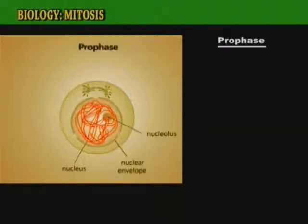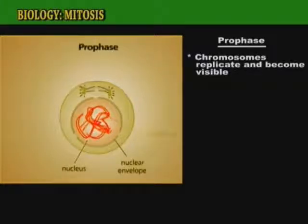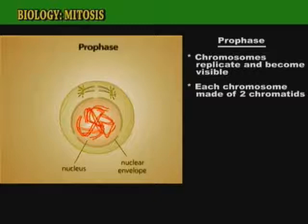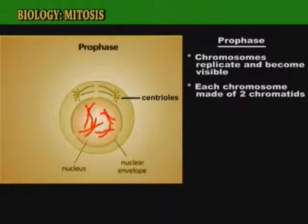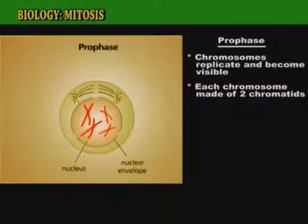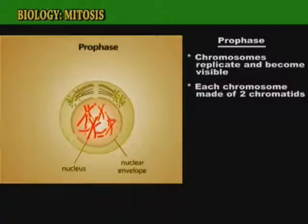The second stage of mitosis is called prophase. During prophase, the chromosomes replicate and become visible. Each chromosome is made up of two chromatids, and these chromatids are held together by a centromere. The centrioles, which are usually beside each other, move to opposite ends of the cell. The nucleolus disappears and the nuclear envelope breaks down. The centrioles form fibers called spindle fibers, which attach themselves to the centromere on each chromosome.